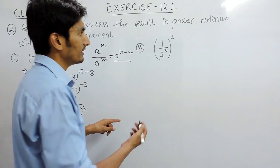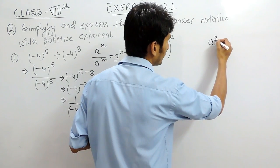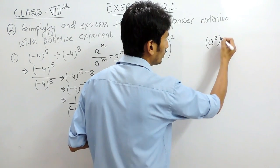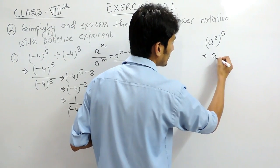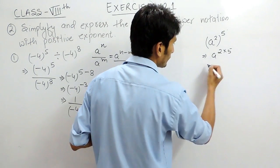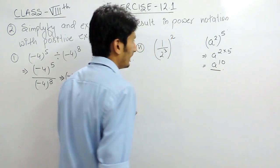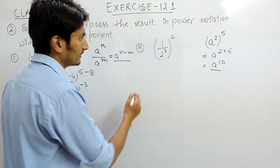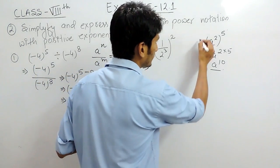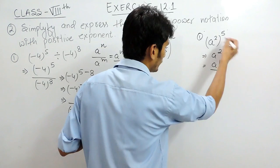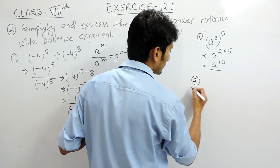For the second part, we are using a formula which says if a is raised to power 2 and multiplied by 5, we have to multiply the powers, giving a raised to power 10. There is also another formula which will be used afterwards.